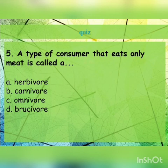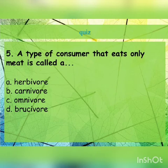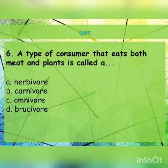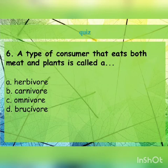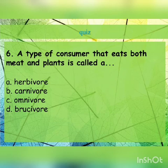Question 5: a type of consumer that eats only meat is called a herbivore, carnivore, omnivore, or brusivore. The answer is carnivore. Question 6: a type of consumer that eats both meat and plants is called a blank. Herbivore eats only plants, carnivore eats only meat — the correct answer is omnivore, because omnivore eats both meat and plants.